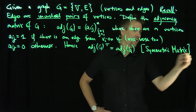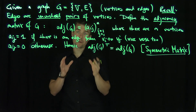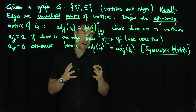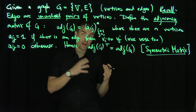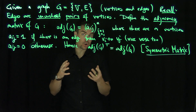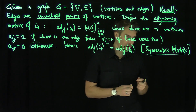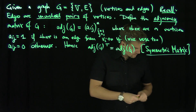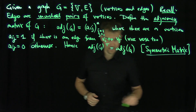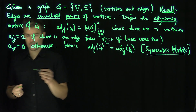We're going to leverage this fact a lot, because symmetric matrices, as we know, have real eigenvalues. So the real eigenvalues are going to tell us a tremendous amount of information about the graph itself. That's our discussion of spectral graph theory. So let me give you an example of the adjacency matrix and then we'll prove the theorem.